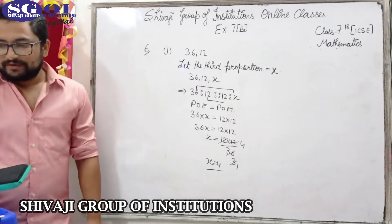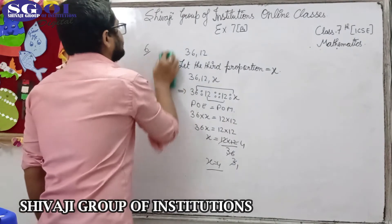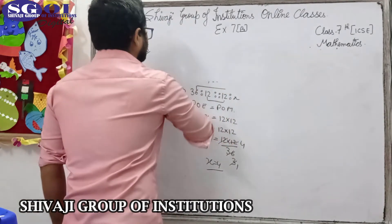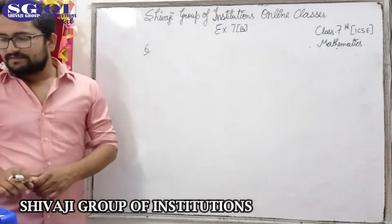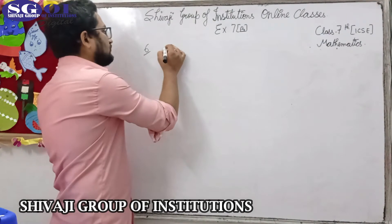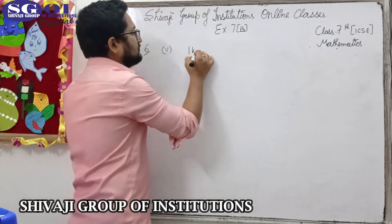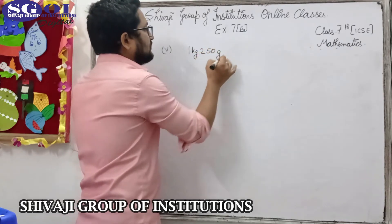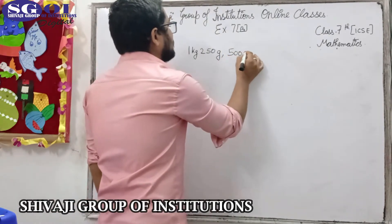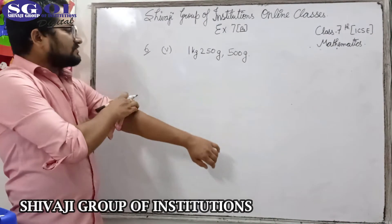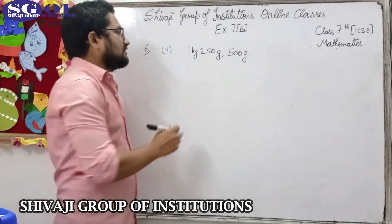Let's move further to question number six, part five. In part number five it is given: 1 kg 250 grams and 500 grams. These are the mass units, so we need to convert them first — change kg to grams.